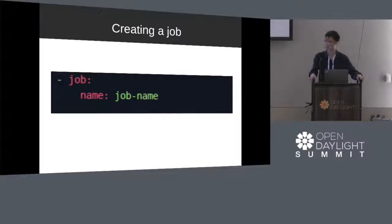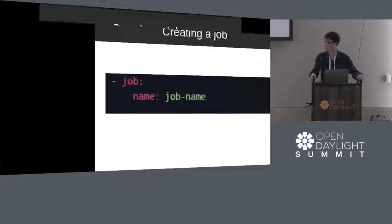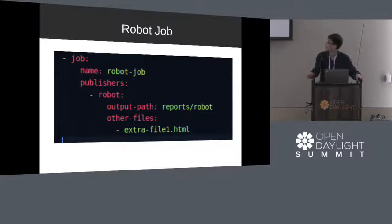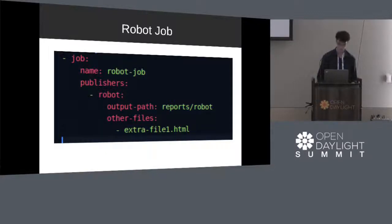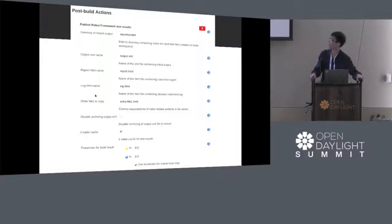Creating a job in Jenkins Job Builder is very simple. You can create a job by writing just dash-job and the name of the job below it. This isn't particularly useful as it's currently doing nothing, but we can make it do something, such as publishing from a plugin. Using the robot plugin as an example, we can collect test results and publish them to the robot framework. I called my job 'robot job' and configured a couple of options in the robot plugin — in particular, output path and other files. I created the robot job, and inside it, I've set a couple of options.